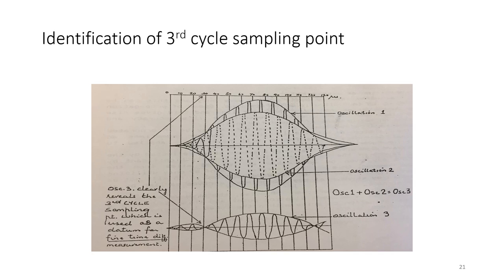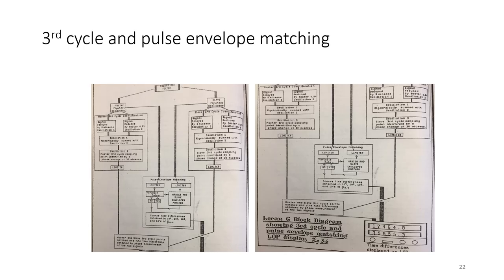The third cycle point meets the criteria and is used to achieve a more precise time delay in microseconds and tenths of a microsecond. Since the transmission frequency is 100 kilohertz, the length of each cycle is 10 microseconds. However, the amplitude of the pulse varies from cycle to cycle within the pulse, and this unique feature of the LORAN-C pulse is used to identify the third cycle point. Once the third cycle of the master pulse and the third cycle of the slave pulse are identified, the fine comparison can then be made.